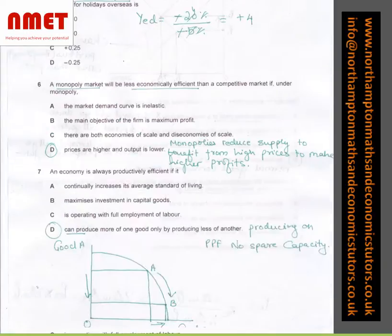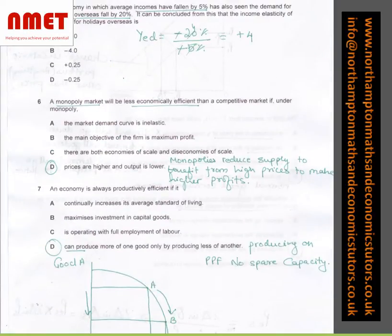On to question 5. An economy which average income has fallen by 5% has also seen the demand for holiday overseas fall by 20%. So it can be concluded that the income elasticity of demand for holidays overseas is, to calculate YED, what we say is change in quantity demanded over change in income, which is minus 20% over minus 5%, which equals plus 4. So the answer is A.